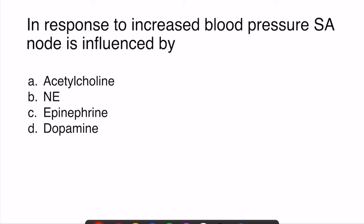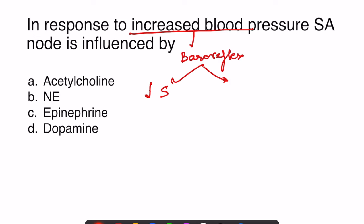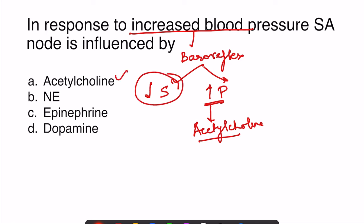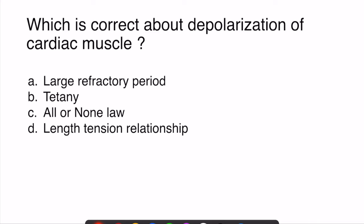The next question asked what influences the SA node in response to increased blood pressure. When blood pressure increases, the baroreflex is activated — it decreases sympathetic activity and increases parasympathetic activity. Increased parasympathetic activity means acetylcholine acts on the SA node. This is the correct answer. Decreased sympathetic activity rules out the other three options. A simple but indirect question.